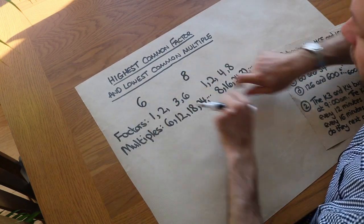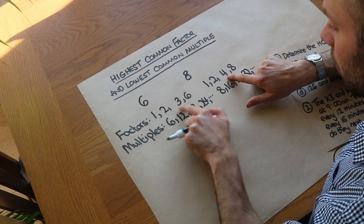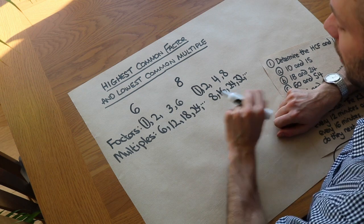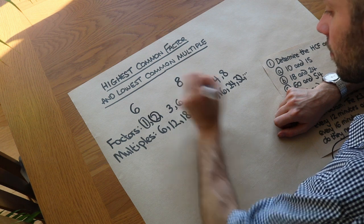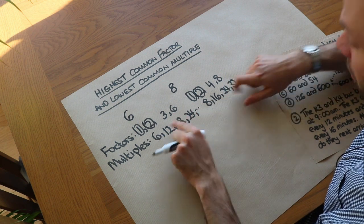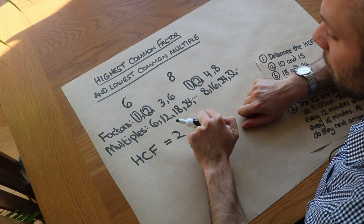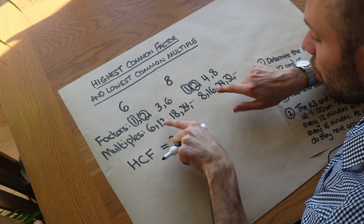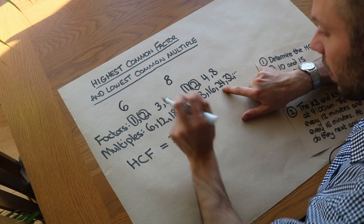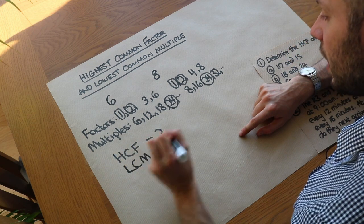A common factor of these two numbers is a factor which is common to both. Well, they both have a common factor of 1, and in fact 1 is a common factor of any two numbers. Well, 2 is also a common factor, but we don't have any other common factors. So the highest common factor — HCF — would be 2. The lowest common multiple is the smallest common multiple of both numbers; we can see they have 24 in common, so the LCM is 24.